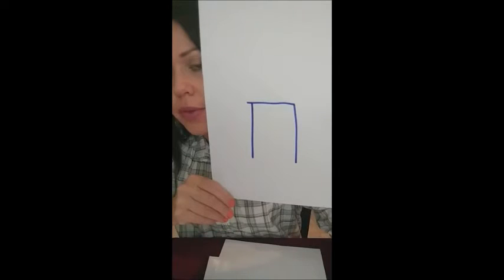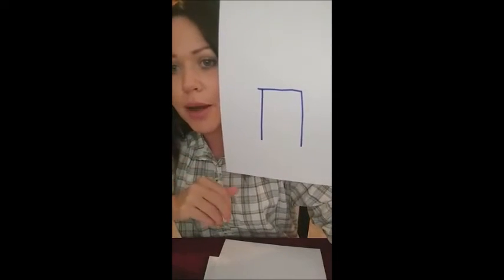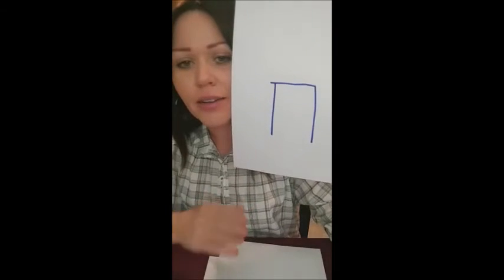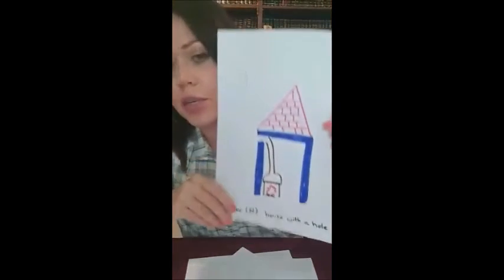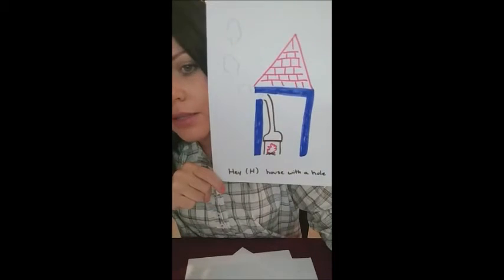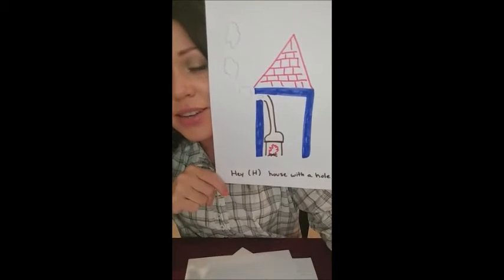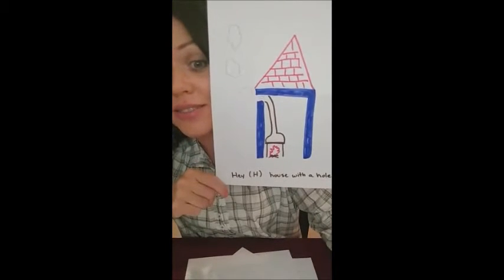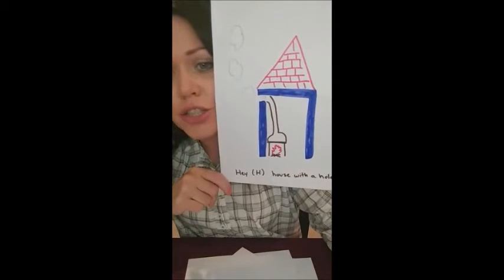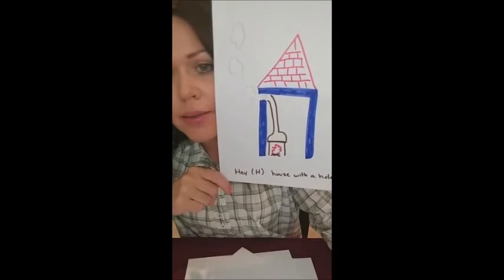We're going to show hey again and chet again. This is hey. This is chet. They're very similar letters, but hey has a hole for the smoke to come out — everything can breathe great. Hey is for heart. It's just H — like house, heart, huh.